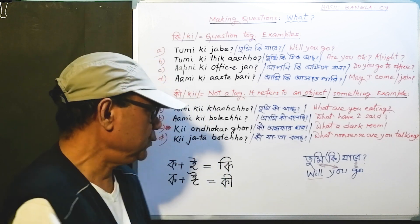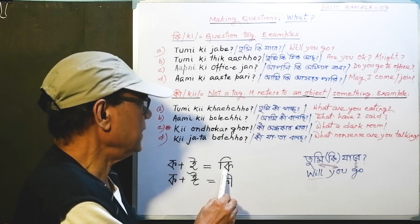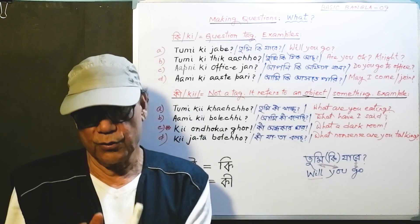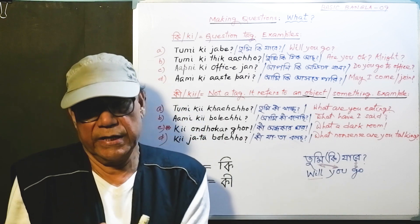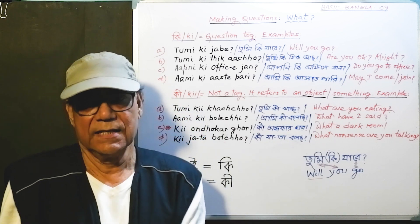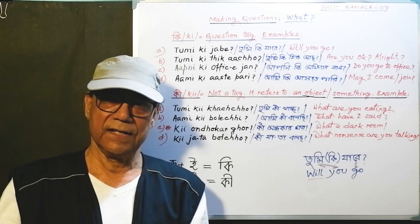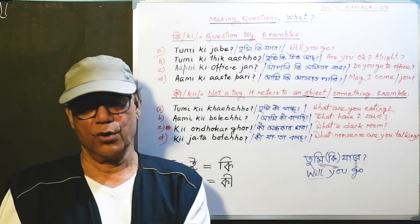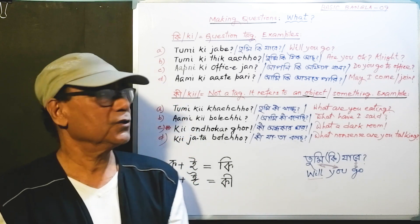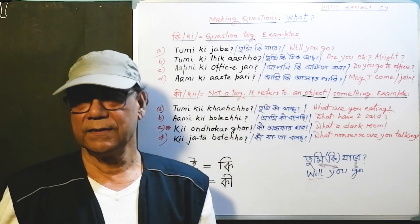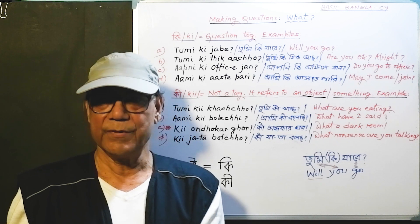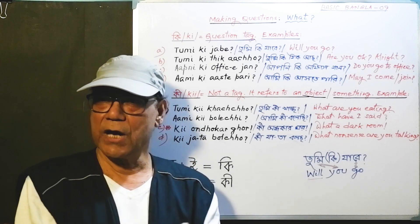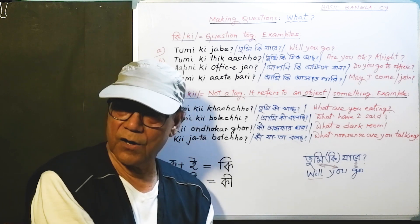When you use this unstressed ki as a question tag, your answer is either yes or no. So 'tumi ki jabe' — yes, ami jabo; no, ami jabo na.